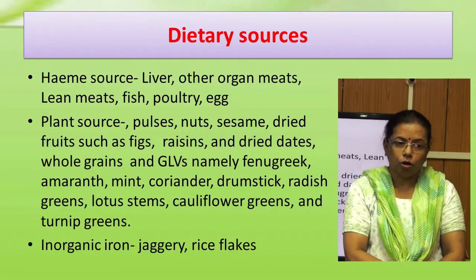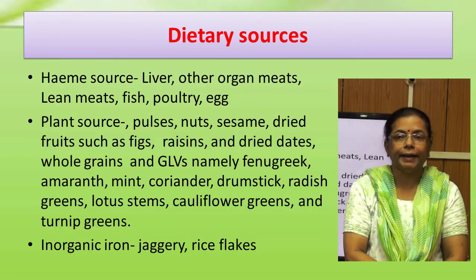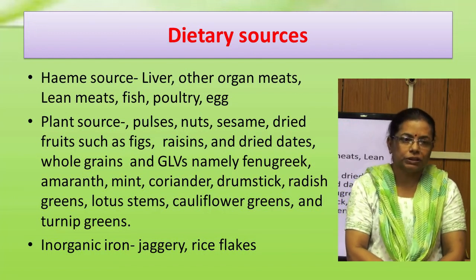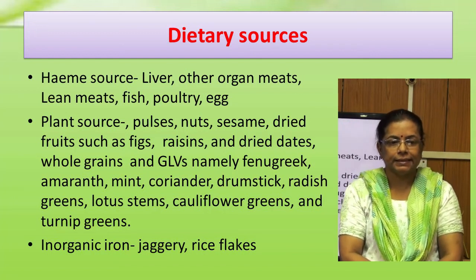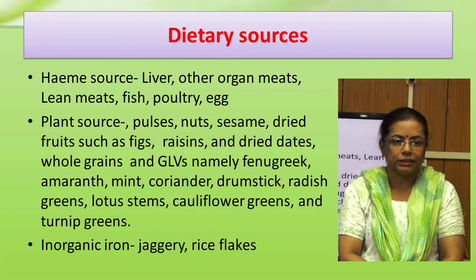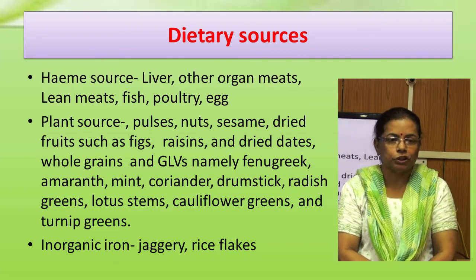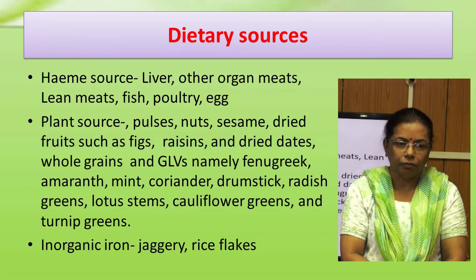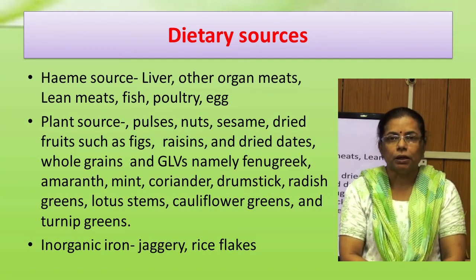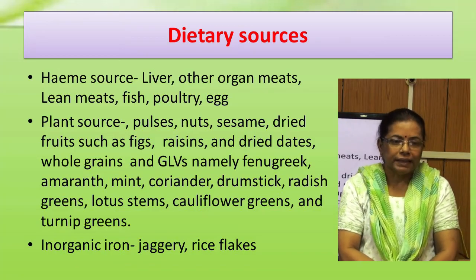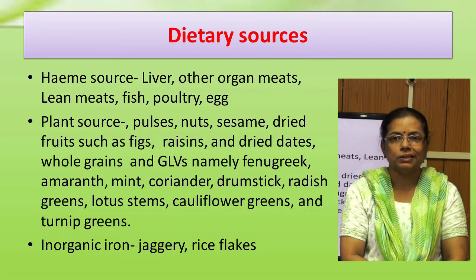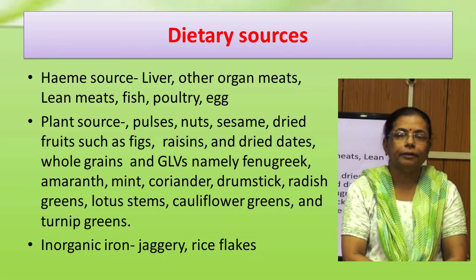Liver, other organ meats, lean meats, fish, poultry, and egg are heme sources and are readily absorbed. Among plant sources, pulses, nuts, sesame, dried fruits such as figs, raisins, dried dates, whole grains, and green leafy vegetables including fenugreek, amaranth, mint, coriander, drumstick, radish greens, lotus stems, cauliflower greens, and turnip greens are good sources of iron. Jaggery and rice flakes contain inorganic iron because they are processed in iron vessels, and are also fair sources of iron.